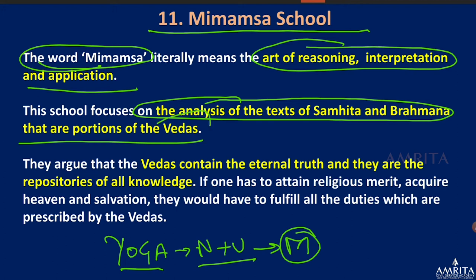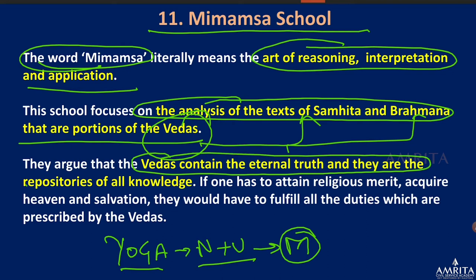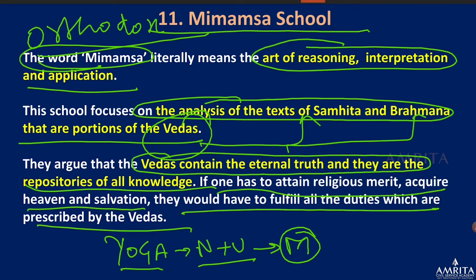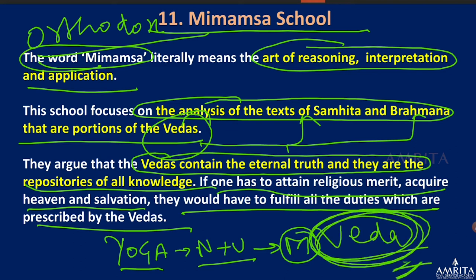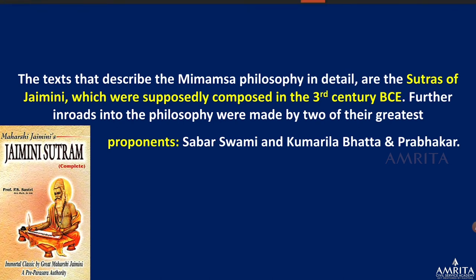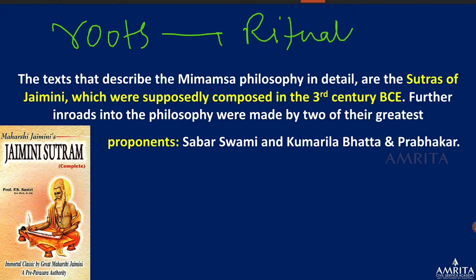The Mimamsa school argues that the Vedas contain eternal truth and are the repository of knowledge. It is an orthodox school of Indian philosophy — the highest authority is given to the Vedas. To attain religious merit, acquire heaven, and salvation, one must fulfill all the duties prescribed by the Vedas. One can see the roots of ritualism in this particular philosophy.